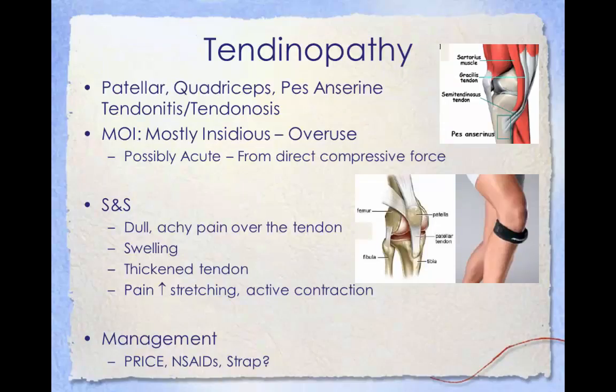Tendinopathy in the knee includes patellar, quadriceps, and pes anserine tendinitis and tendinosis. Patellar tendonitis, also known as jumper's knee, is most common in athletes whose sports involve frequent jumping such as basketball and volleyball, though even non-jumping sport athletes can develop it. Most knee tendinopathy injuries result from overuse but can also result from a direct compressive force. Signs and symptoms include dull achy pain over the tendon, swelling, tendon thickening, and increased pain with stretching and active contractions of the knee. Management includes PRICE, NSAIDs, and a patellar strap — also known as a Chopat strap — which may help the tendon and change the line of pull of the muscle.